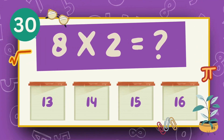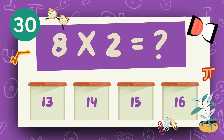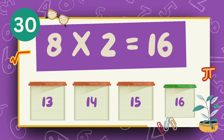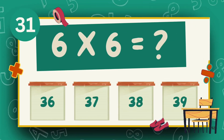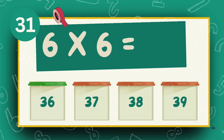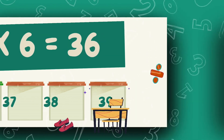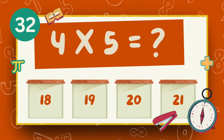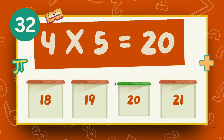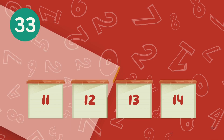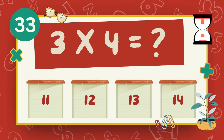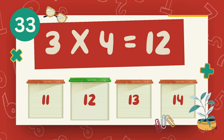What is 8 multiply 2? The answer is 16. What is 6 multiply 6? The answer is 36. What is 4 multiply 5? The answer is 20. What is 3 multiply 4? The answer is 12.